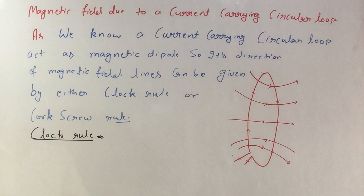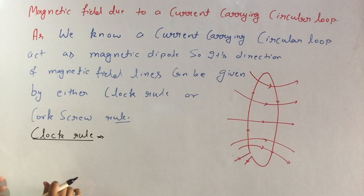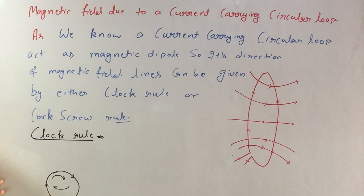We observe the clock's direction. This is the biggest example of a current carrying circular loop. The clock rule states: if I take a circular coil and a clockwise current is used, then joining the ends without arrow heads gives south pole.